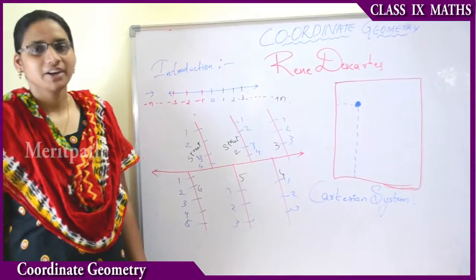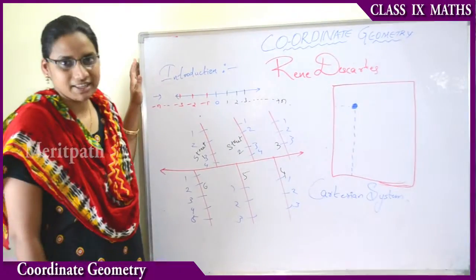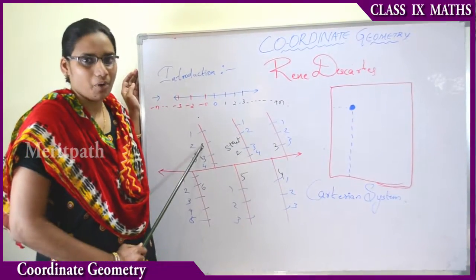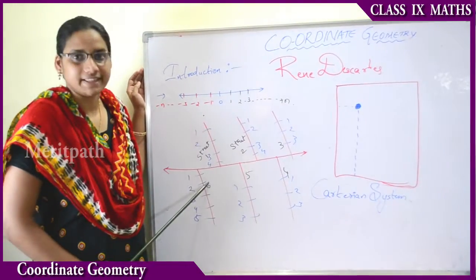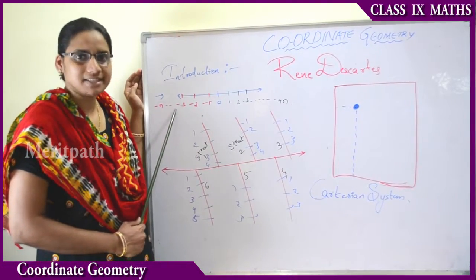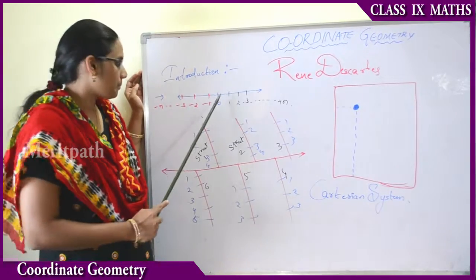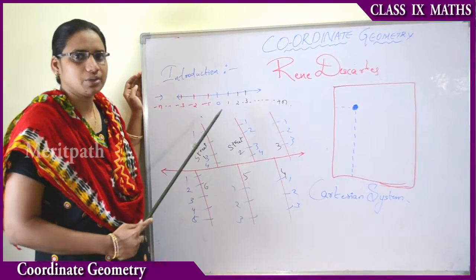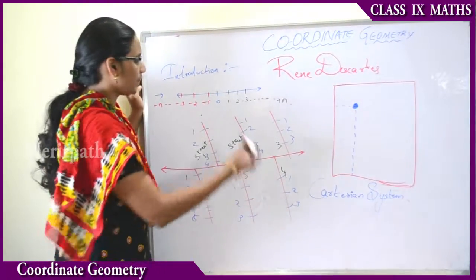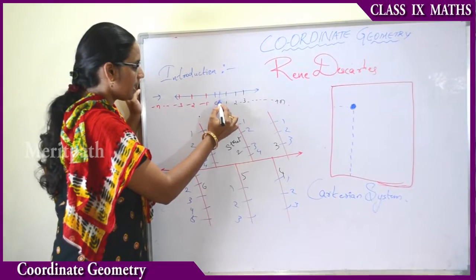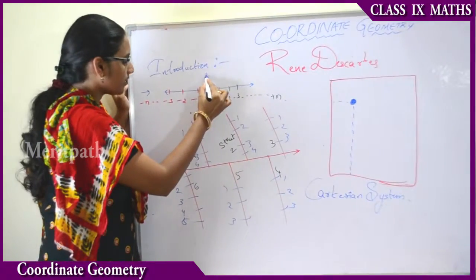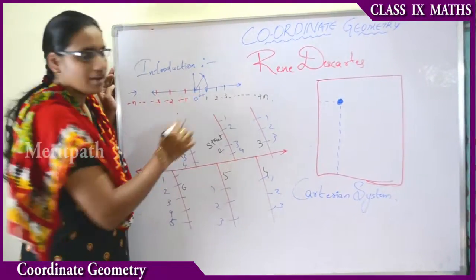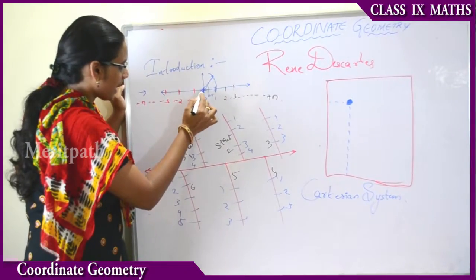Good morning, dear students. Today we are going to learn Chapter 3, that is Coordinate Geometry. Let us see how to plot a point on our axis. We have seen in the number system how to plot a point on the number line — for example, 0.5, one, two, three, three-halves — anything we can plot on the number line. We identified that by using a divider and measuring the diagonal angle.